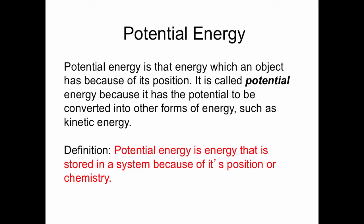Let's talk about potential energy first. Potential energy is the energy which an object has because of its position. It is called potential energy because it has the potential to be converted into other forms of energy, such as kinetic. So potential is named that way because it has the potential to become another type of energy. The definition for potential energy is energy that is stored in a system because of its position or chemistry. Potential energy is the energy of things that are not moving — they have the potential to move.